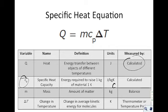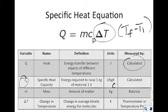Mass is the amount of matter, measured in kilograms — the more mass you have, the more difficult it is to change the temperature. And delta T is the change in temperature, which represents the final temperature minus the initial temperature. You can measure it with a thermometer or temperature probe.